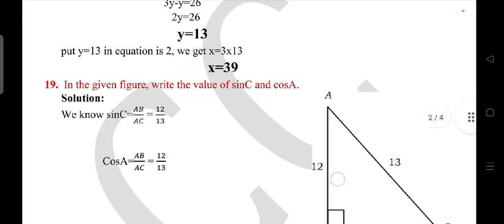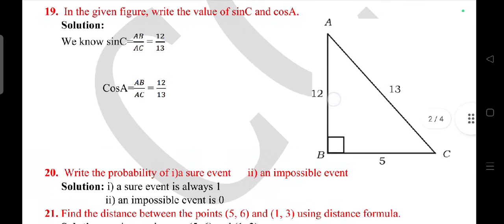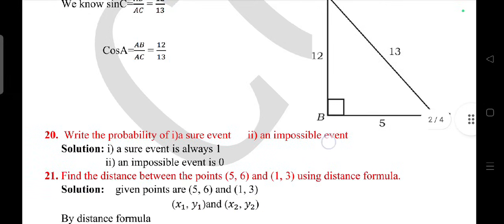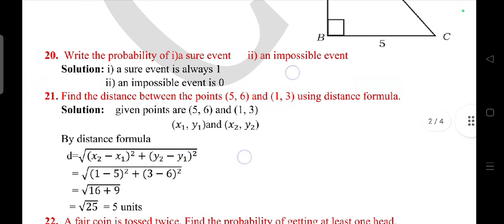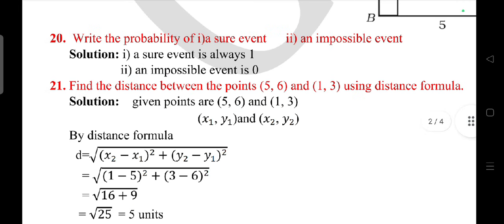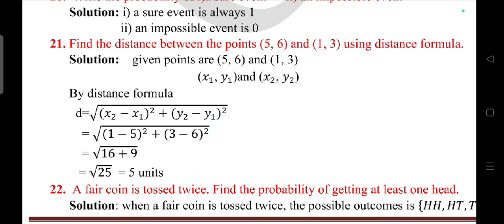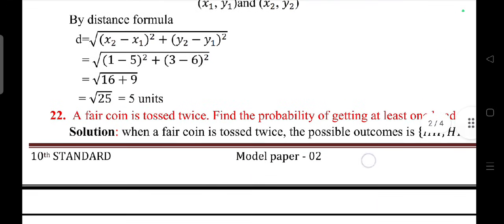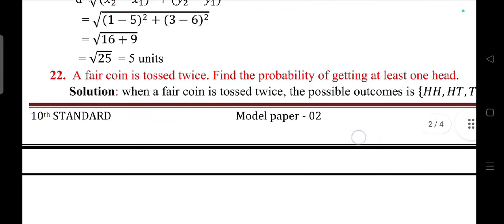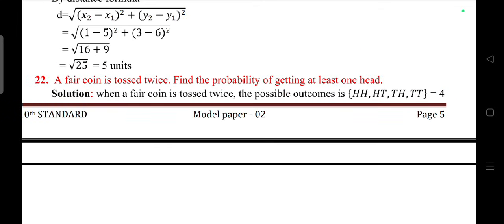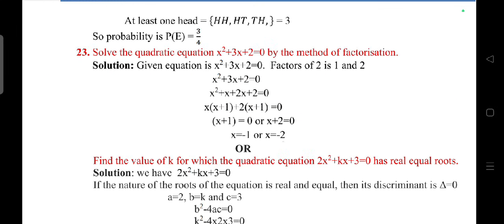In the given figure, write the value of sin C and cos C. Answer is sin C is 12 by 13 and cos A is 12 by 13. State the probability of a sure event and impossible event: sure event is 1, impossible event is 0. Find the distance between the point 5 comma 6 and 1 comma 3 using distance formula.